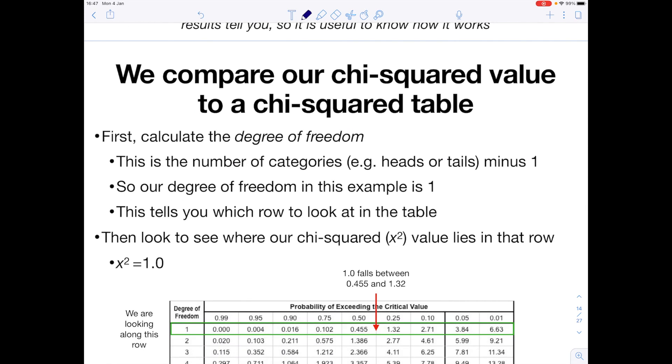And so now we've calculated our chi-squared value, we need to compare it to a chi-squared table. In order to do this our first step is to calculate the degrees of freedom. Now this sounds complicated, but I promise it's quite straightforward. You just need to know what the degree of freedom means, and all it means is you need to take your number of categories, in the case of the flipped coin, that's heads or tails, and then you need to minus 1 from that answer.